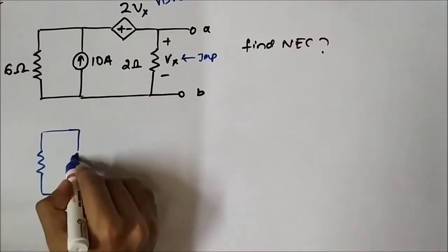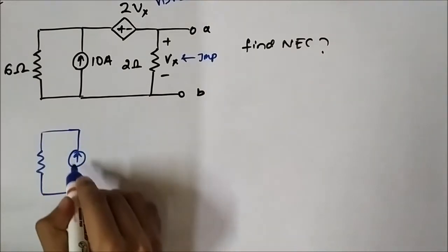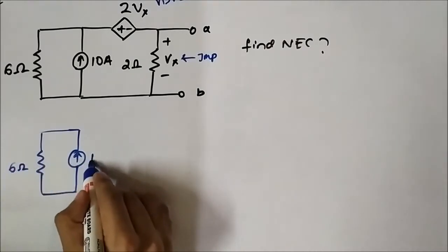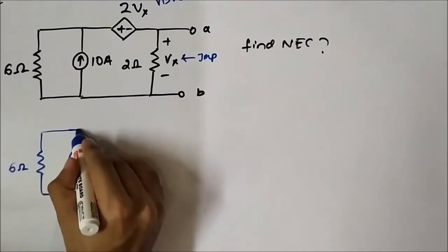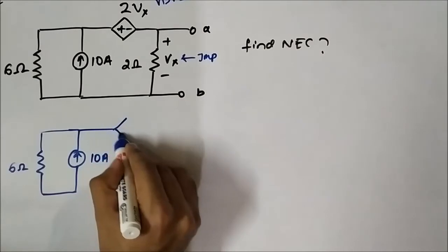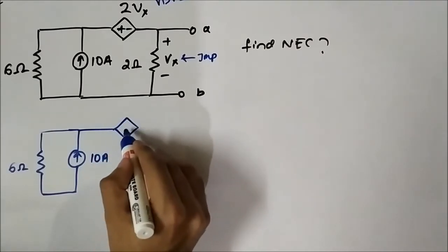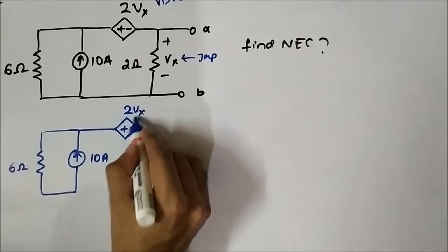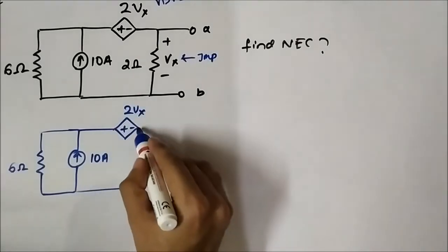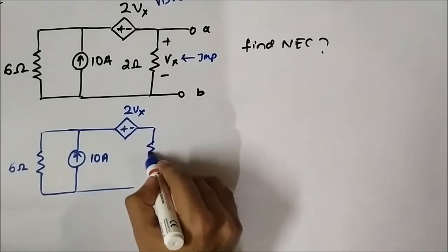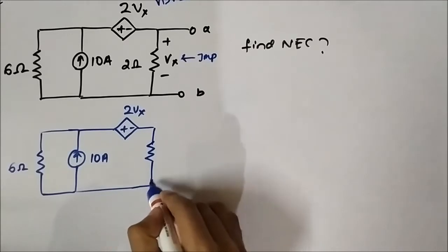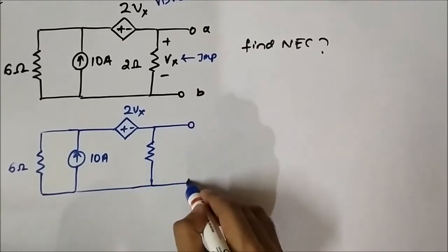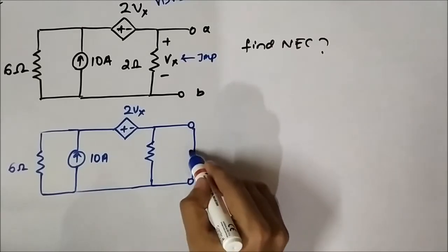The redrawn circuit has this 6 ohm resistor, a 10 ampere current source, the dependent voltage source 2Vx, a 1 ohm resistor, and this is the shorted path between terminals A and B.